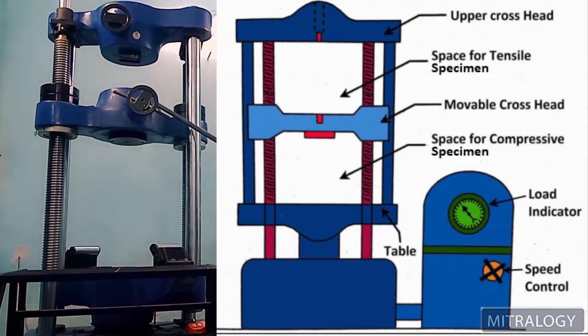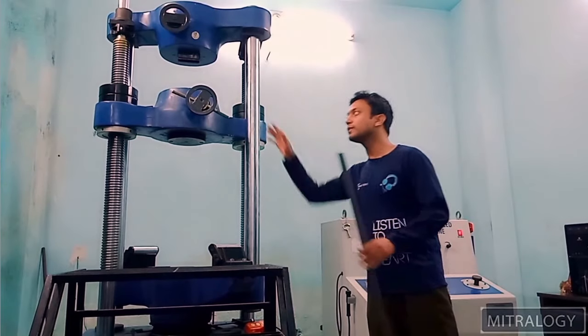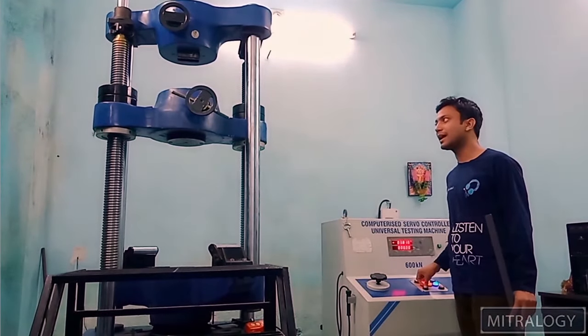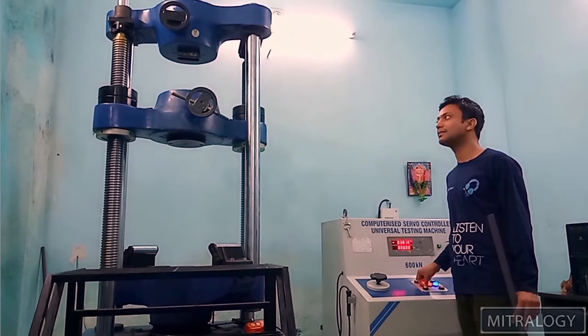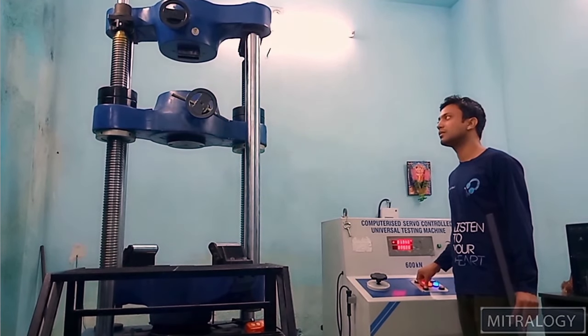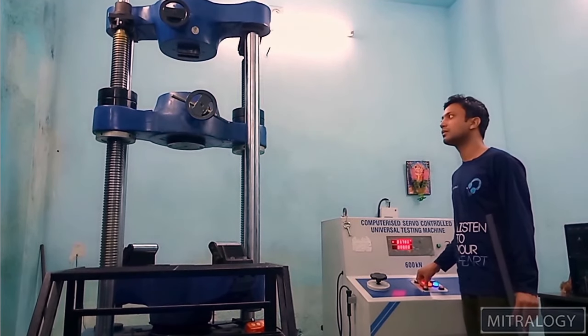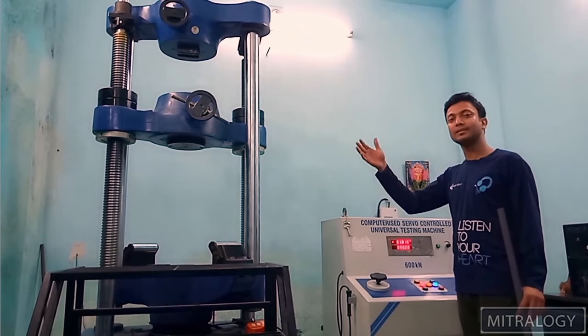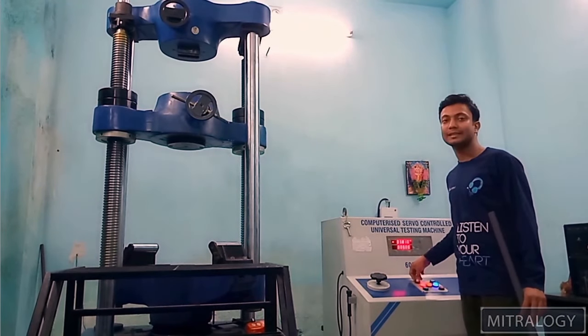There are also two jaws which are fitted inside of maneuverable crosshead. We can move the crosshead up and down. As you can see I am keeping it down. Similarly we can raise it by pressing the up button.